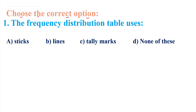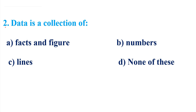Now choose the correct option. Question 1: The frequency distribution table uses — A. Stick, B. Lines, C. Tally marks, D. None of these. Your correct answer is C — Tally marks. Question 2: Data is the collection of — A. Facts and figures, B. Numbers, C. Lines, D. None of these. Your correct answer is A — Facts and figures.